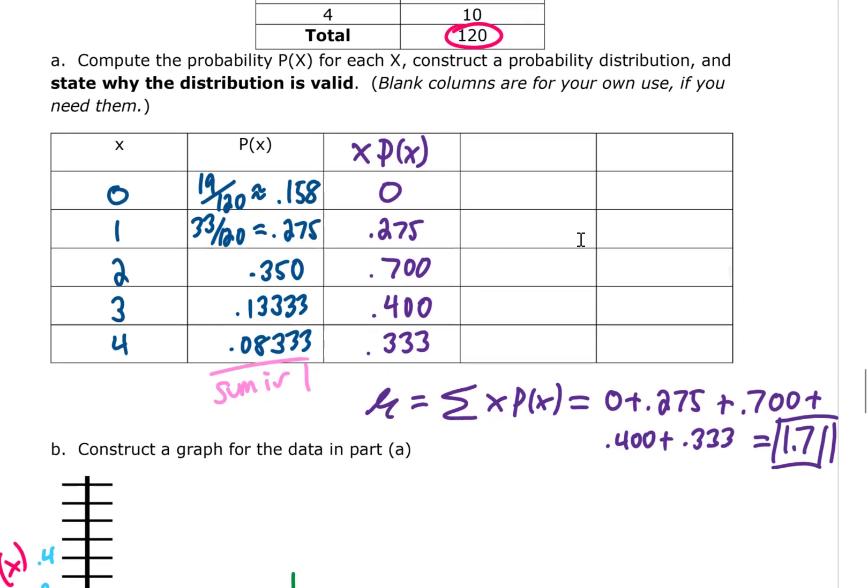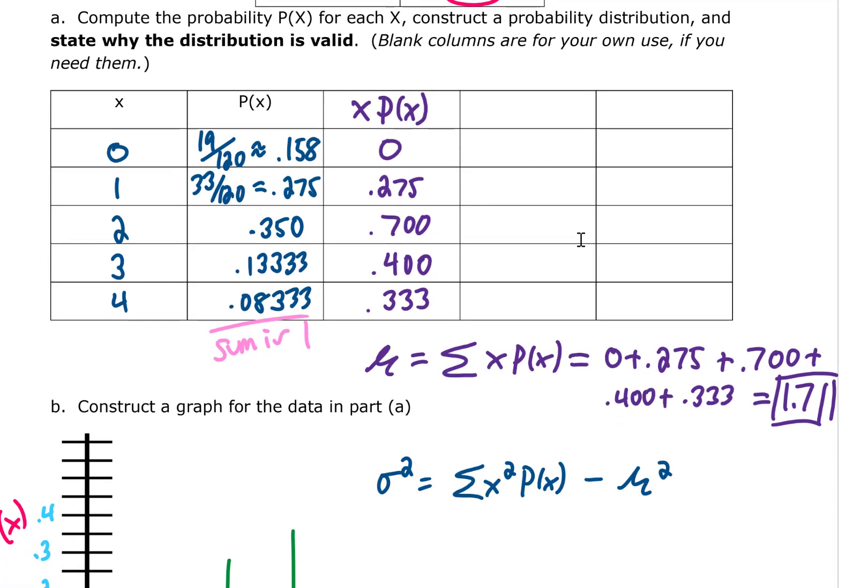The next thing we need to do is calculate the variance. The equation for the variance requires that we calculate x squared and take our x squared and multiply it by each one of our probabilities. Let's do that: 0 squared is 0, 1 squared is 1, 2 squared is 4, 3 squared is 9, and 4 squared is 16.